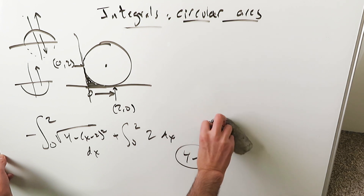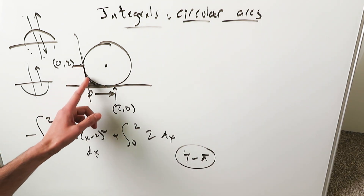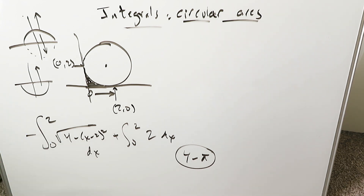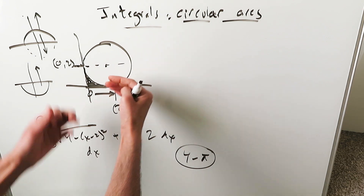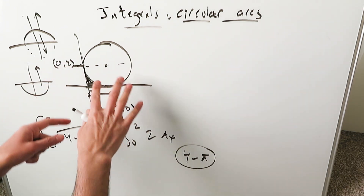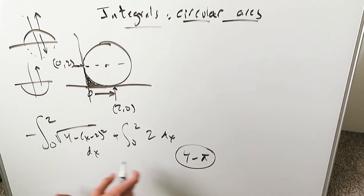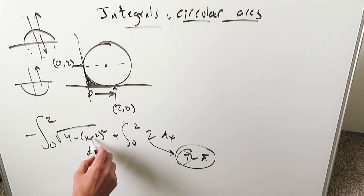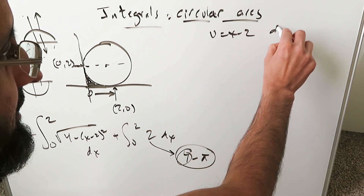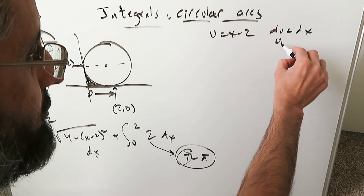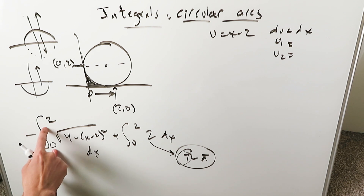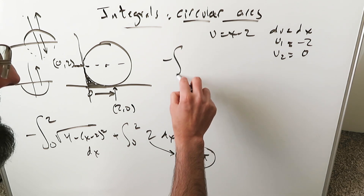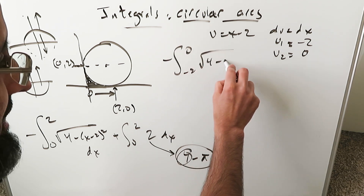You'll get your 4 from the constant term and your minus pi from the arc term. To evaluate the arc integral, you can do a u-substitution: let u equal x minus 2, then du equals dx. New limits: when x equals 0, u1 equals minus 2; when x equals 2, u2 equals 0. So you have minus the integral from minus 2 to 0 of square root of 4 minus u squared, du.